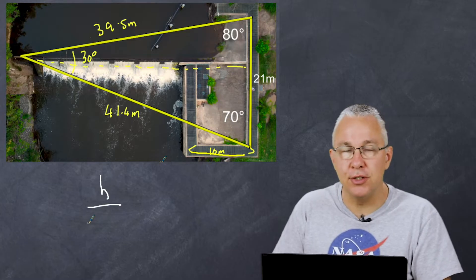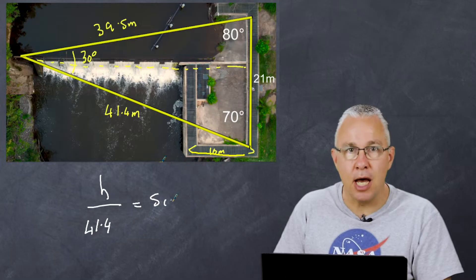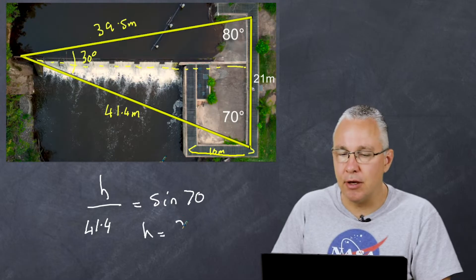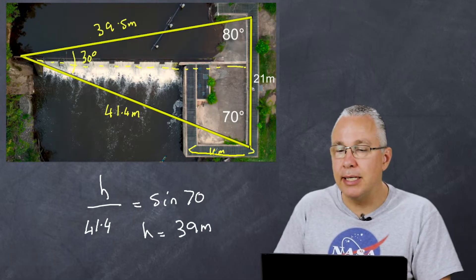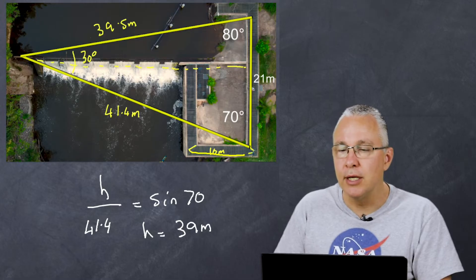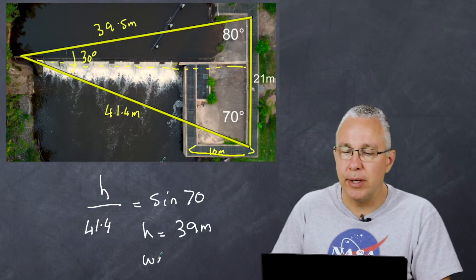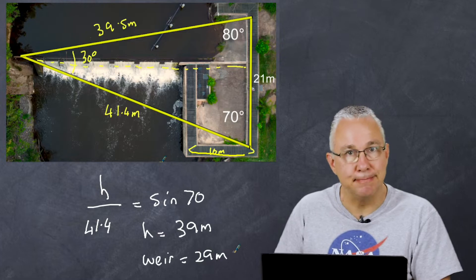We can say that the height divided by my hypotenuse, which is 41.4, is equal to the sine of 70 degrees. A simple mathematical calculation gives us the height of 39 meters. Now remember, my distance from the edge of the water to my baseline was already determined, which was 10 meters, and so my weir becomes equivalent to 29 meters.